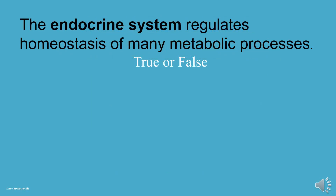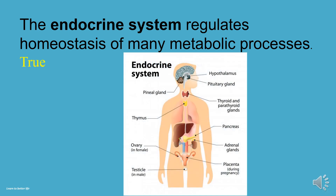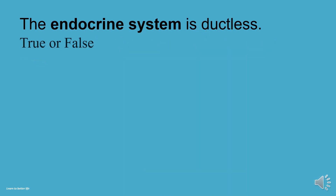The endocrine system regulates homeostasis of many metabolic processes. True or false? The answer is true. The endocrine system is ductless. True or false? It's true.